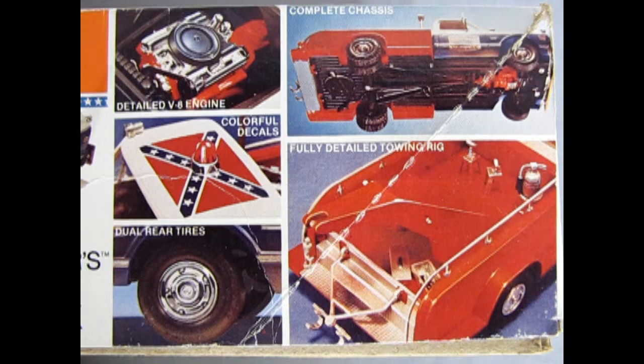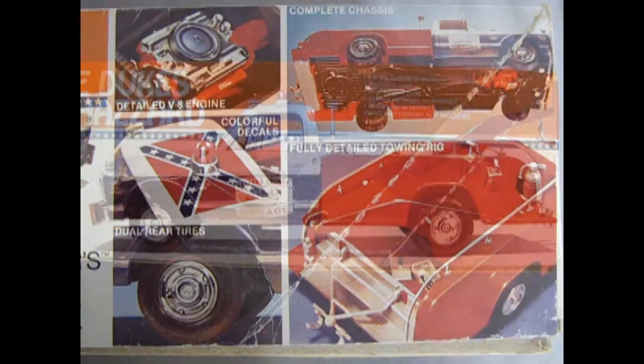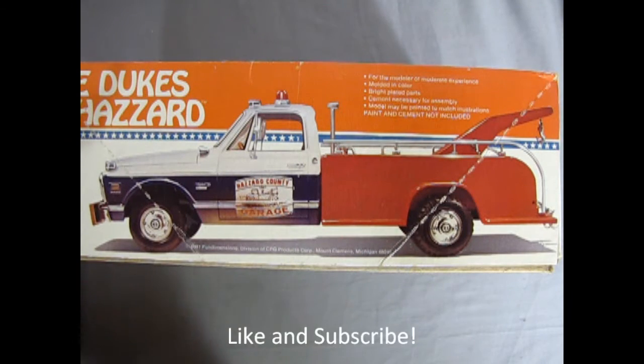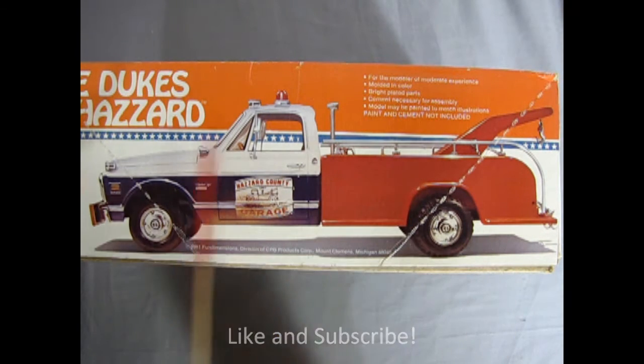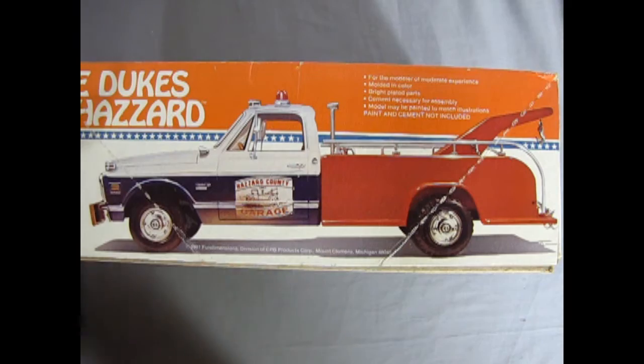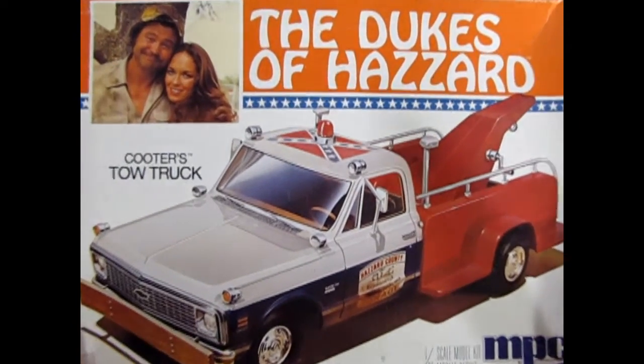This model comes with the detailed V8 engine, colorful decals, dual rear tires, complete chassis and a fully detailed towing rig. According to the box, this model is shown in the actual size right on the side of the box. Now let's take the lid off this truck and see what we got on the inside.